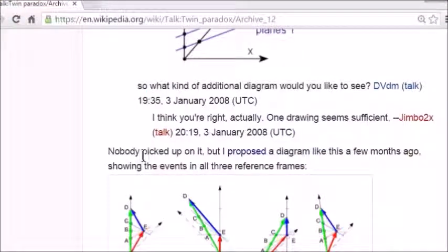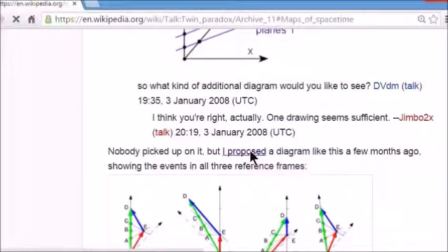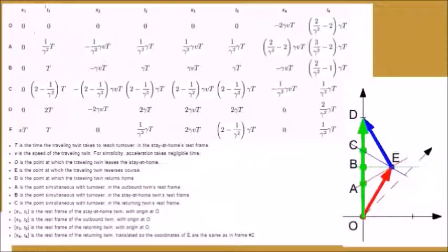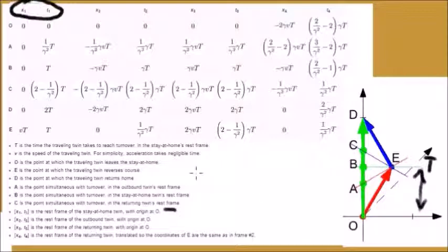Now if you're curious about how W Woods calculated the coordinates of these events you might notice the highlighted words here 'I proposed' and click on them. x1 and t1 represent the coordinates of these events in the rest frame of the stay-at-home twin with origin at O. t is the time the traveling twin takes to reach turnover in the stay-at-home twin's rest frame. I will mark that time t here on the diagram showing the earth rest frame.